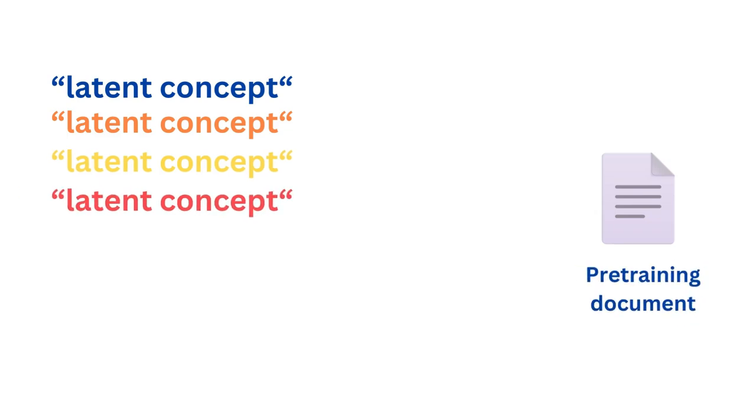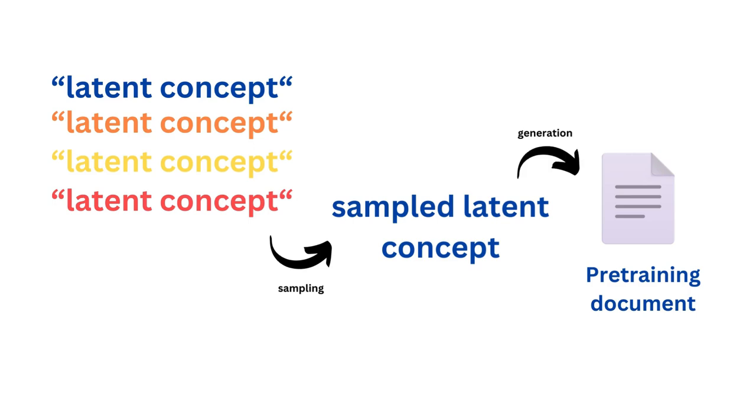To go from the pure latent concept to the pre-training document, a sampling procedure has taken place from a human at some point in time. The sampled concepts were then used to generate a document and crystallized one or many concepts into the pre-training data for the LLM.